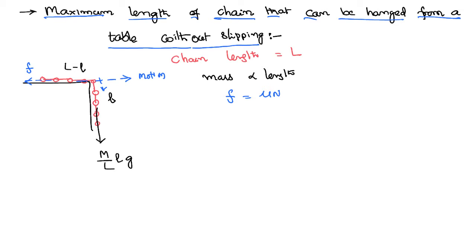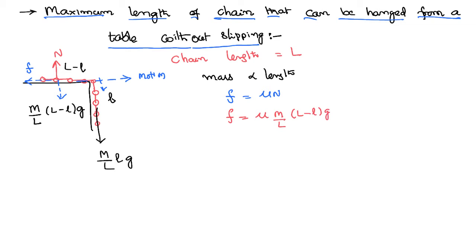The normal reaction is the reaction to the action of the weight pressing on the table. The entire weight is not on the table — only the portion of mass on the table, which is mass per unit length times (L − l). That mass times g gives the action force, and the surface applies the same reaction in the opposite direction. Therefore, frictional force equals μ times (M/L)(L − l)g.